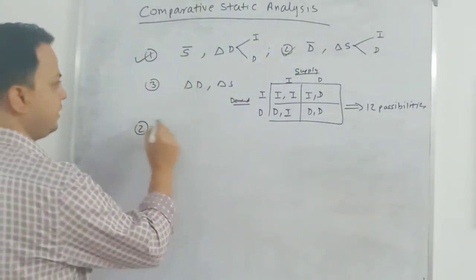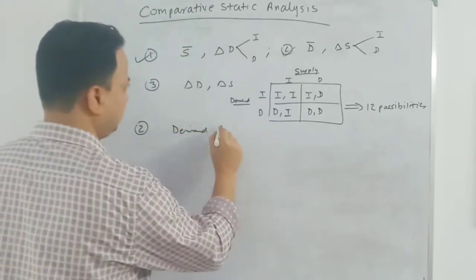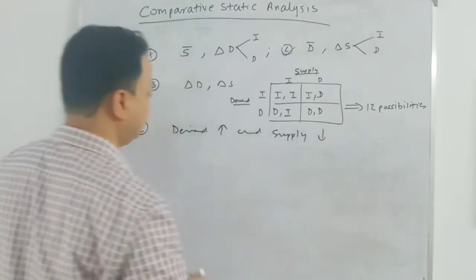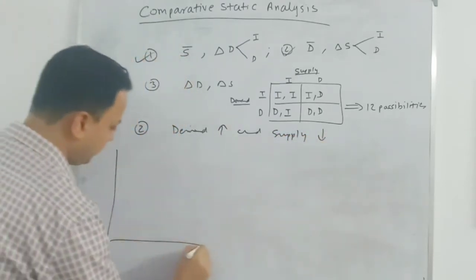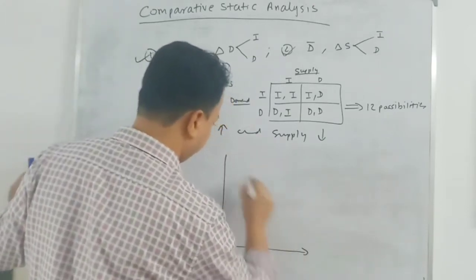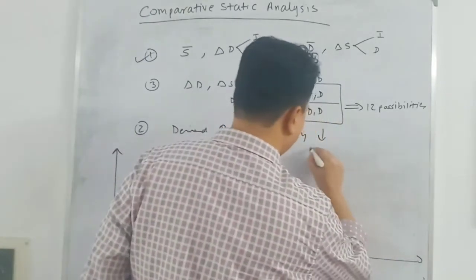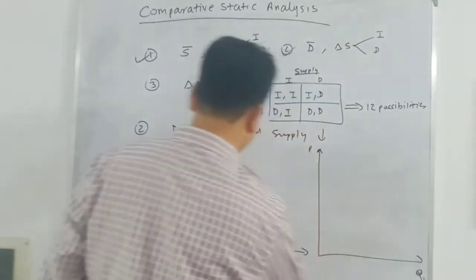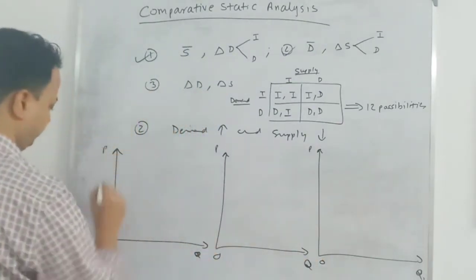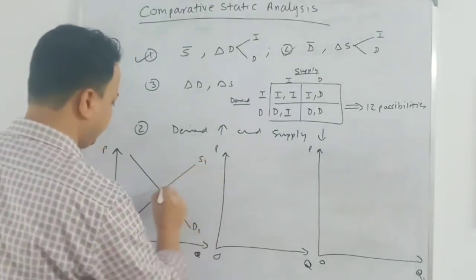Second case is demand is increasing and supply is decreasing, so we have three possibilities to look at. Again drawing the axes, D1 is my initial demand and S1 is my initial supply.